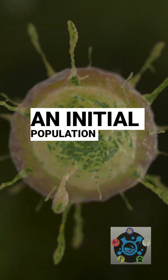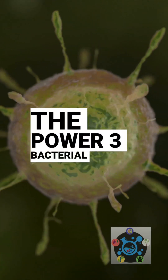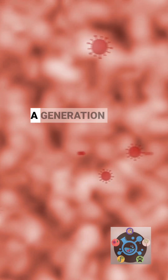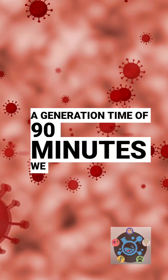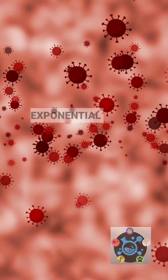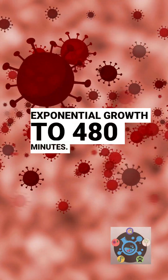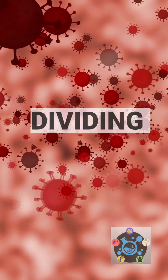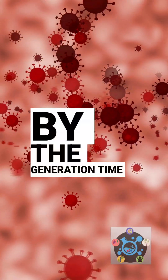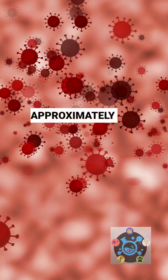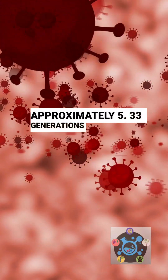Starting with an initial population of 10 to the power 3 bacterial cells and a generation time of 90 minutes, we first convert the 8 hours of exponential growth to 480 minutes. Dividing the total growth time by the generation time yields approximately 5.33 generations.